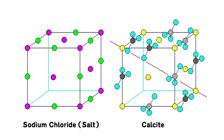The structure of calcite is not very complex but can be hard to visualize. It is sometimes described as a modified sodium chloride structure. On the left is the cubic structure of sodium chloride, where sodium ions are purple and chlorine ions are green. On the right-hand side is calcite, where calcium is yellow, oxygen is blue, and carbon is grey. We can see rows of alternating calcium and carbonate units, just like sodium and chloride alternating in halite.